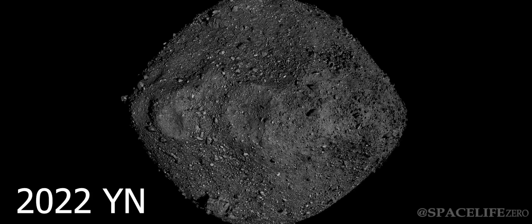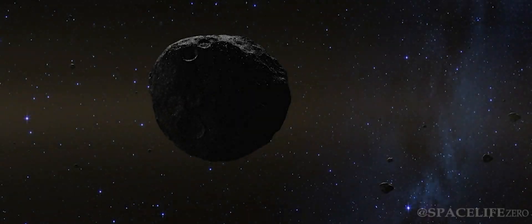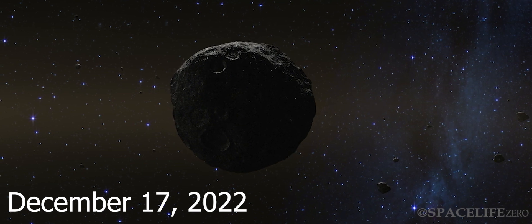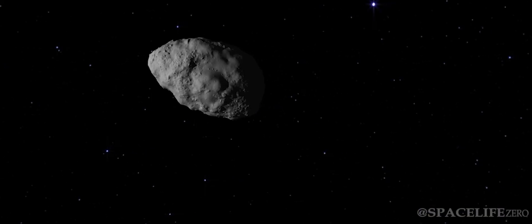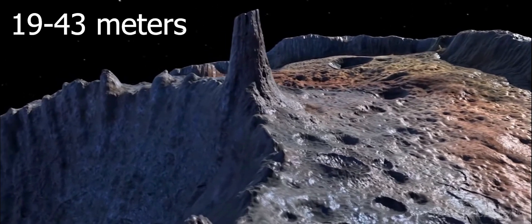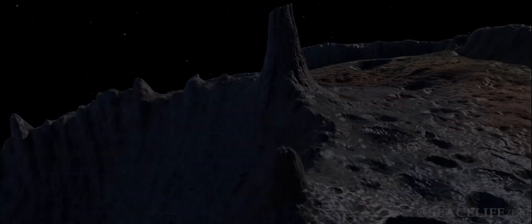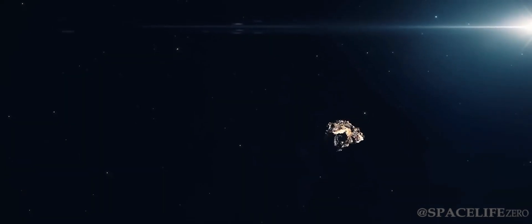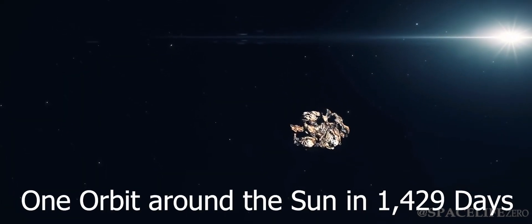Asteroid 2022 YN was discovered on December 17, 2022. It belongs to the Amor Group and has an estimated size in the range from 19 meters to 43 meters. The asteroid completes one solar orbit in 1429 days.